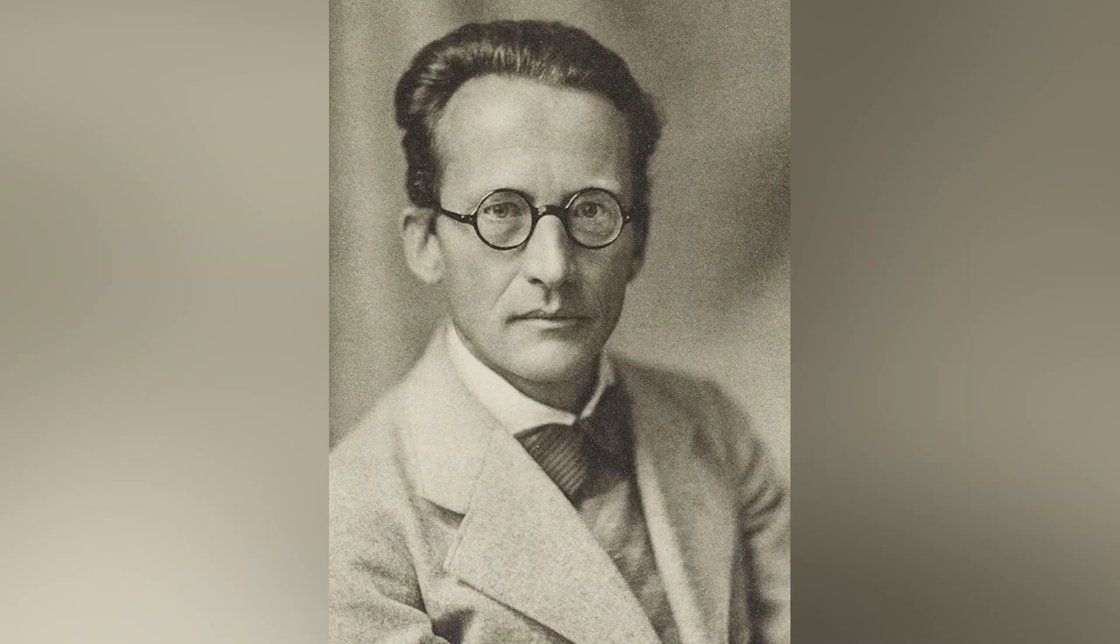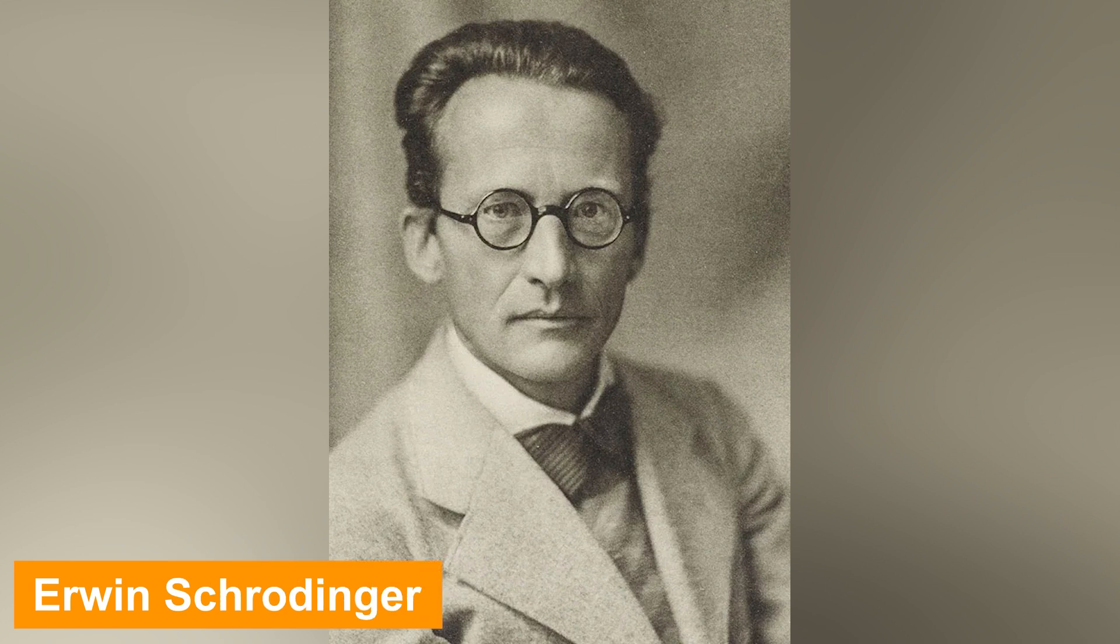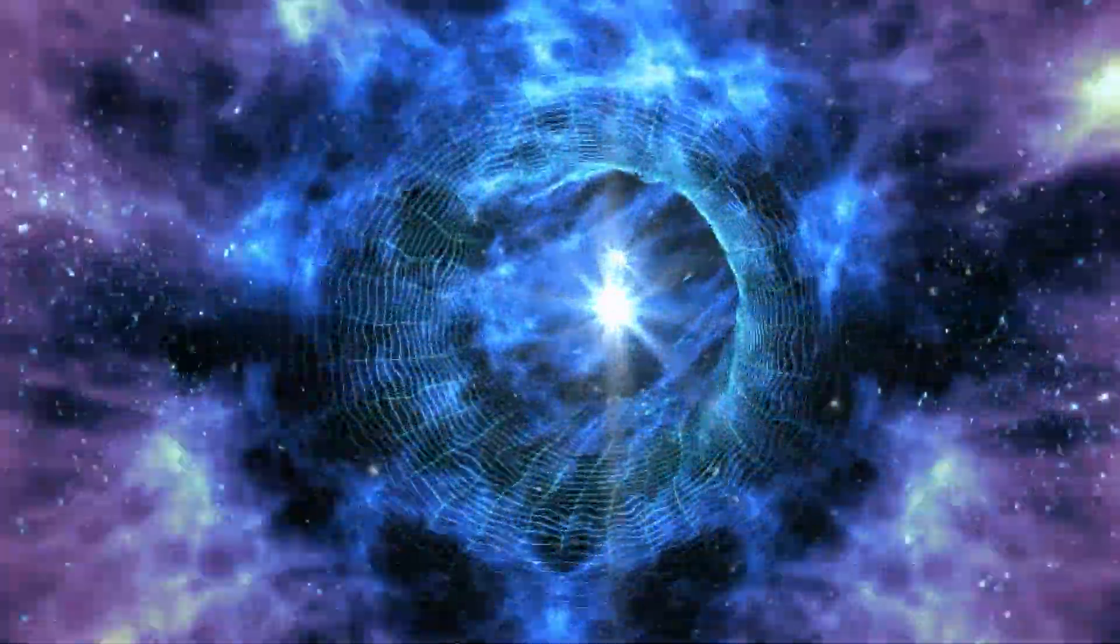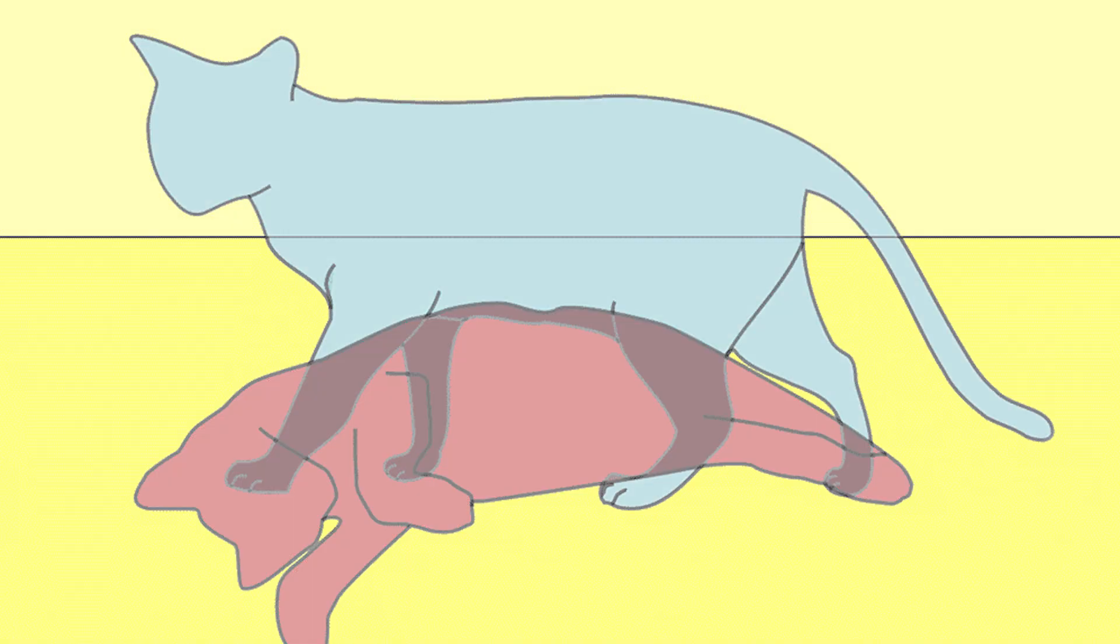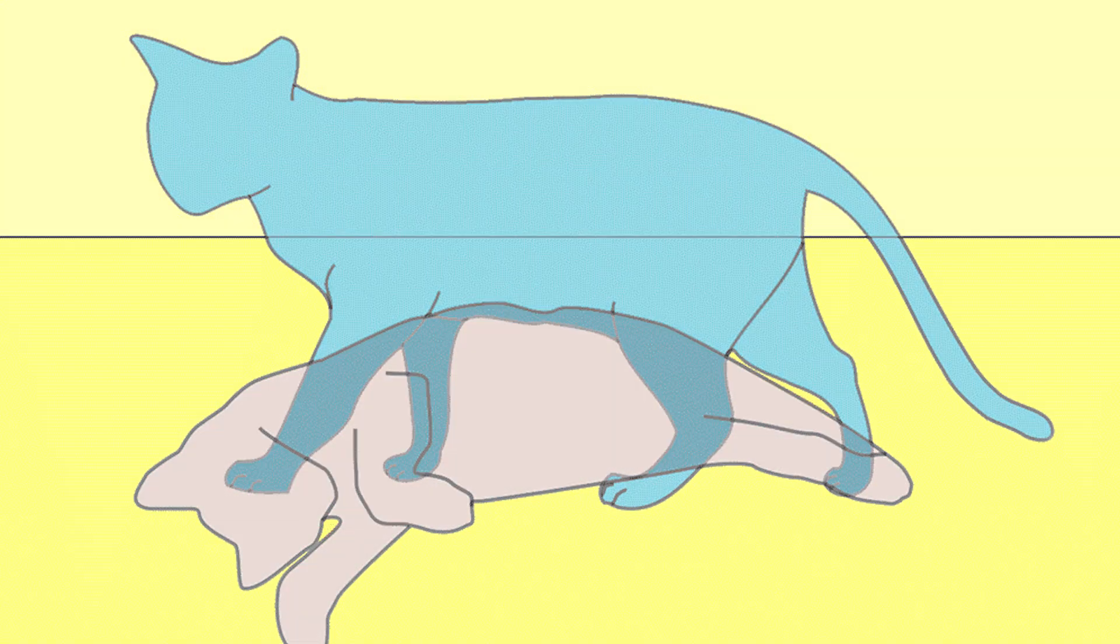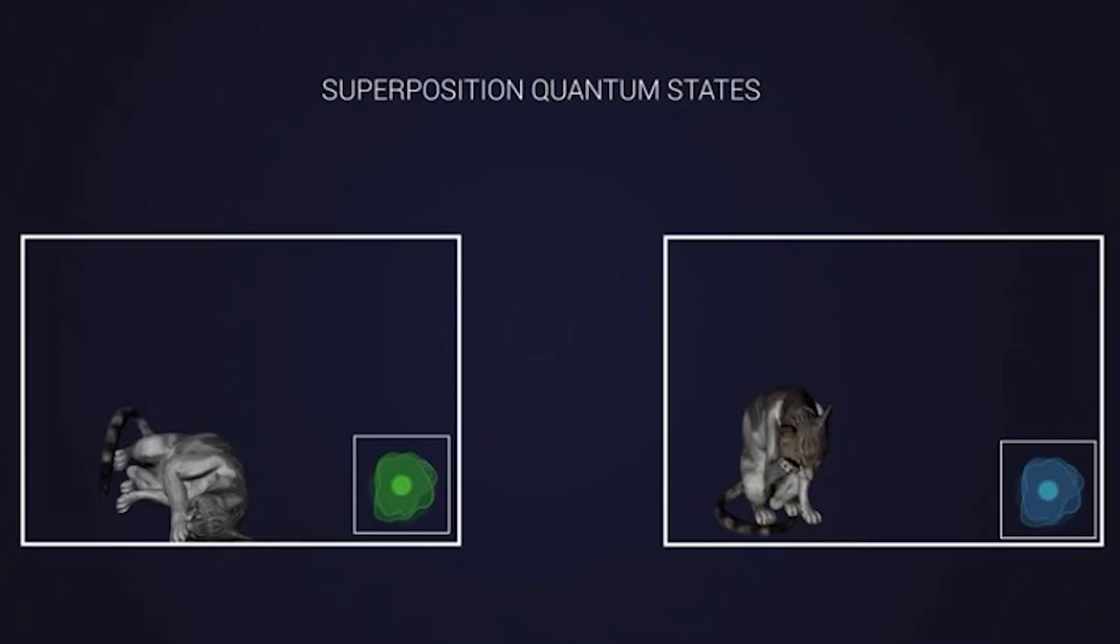In 1926, Erwin Schrödinger defined every quantum state an elementary particle could be in. However, the problem was that the equation had no concrete solution. This gave birth to the famous Schrödinger's cat thought experiment, where a cat could simultaneously be dead and alive depending on the particle's quantum state.